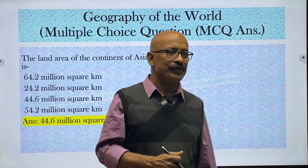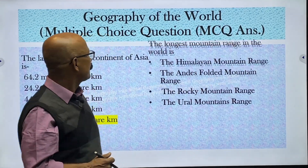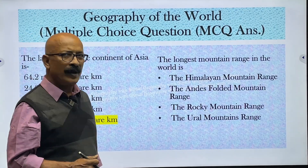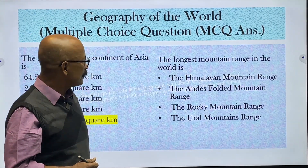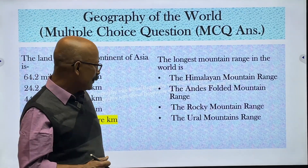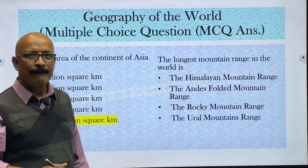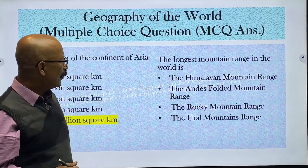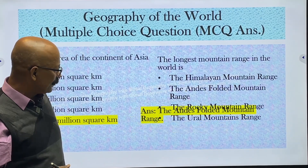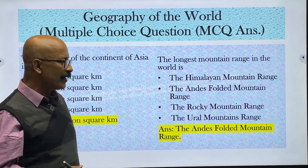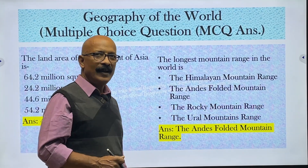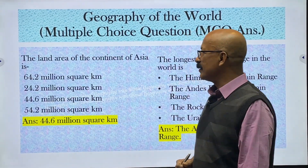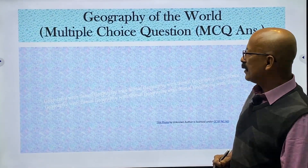Next: the longest mountain range in the world is what? Options include Himalaya, Andes, Rocky, and Ural. The correct answer is Andes — it is 8,000 kilometers, the longest mountain system.